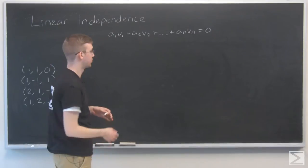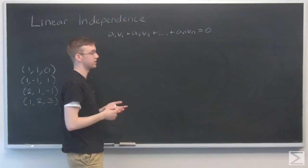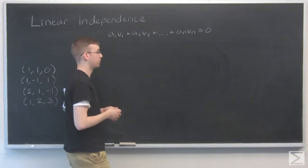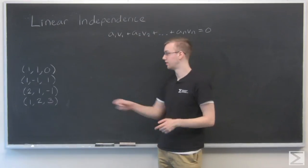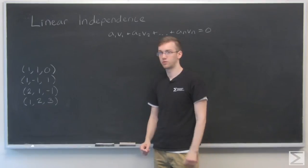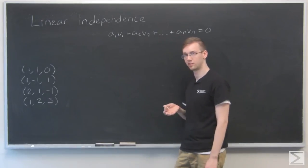And the only way that this can be true is if all these a's are equal to zero. So how do we go about proving this? How do we go about saying that a set of vectors is linearly independent? Turns out that there are a number of ways to do that but let's work through it with an example.